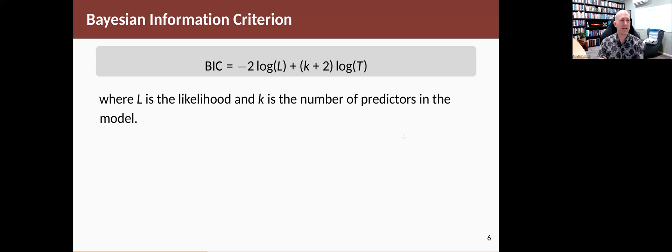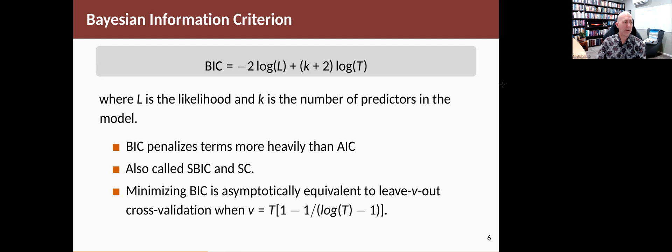There's another statistic that is sometimes used called the BIC, which has even stronger penalties. So as you add more terms to the model, they're penalized more strongly with a multiple by the log of T, log of the length of the series, natural logarithms. That's sometimes also called SBIC, the Schwarz Bayesian information criterion, or just Schwarz criterion.